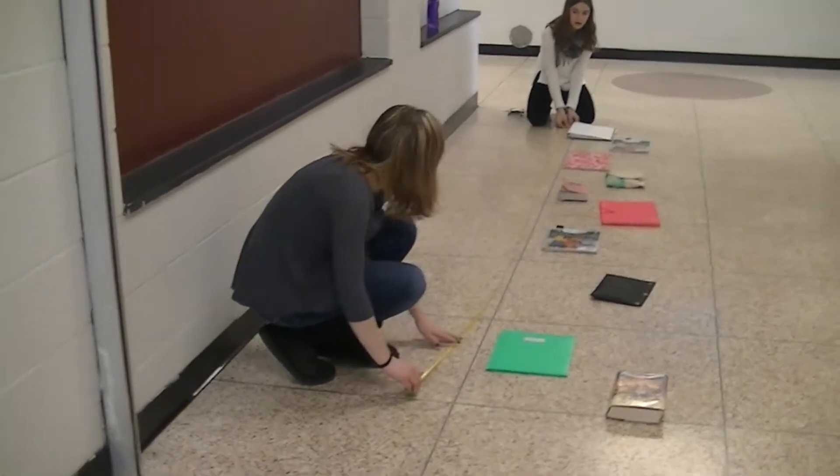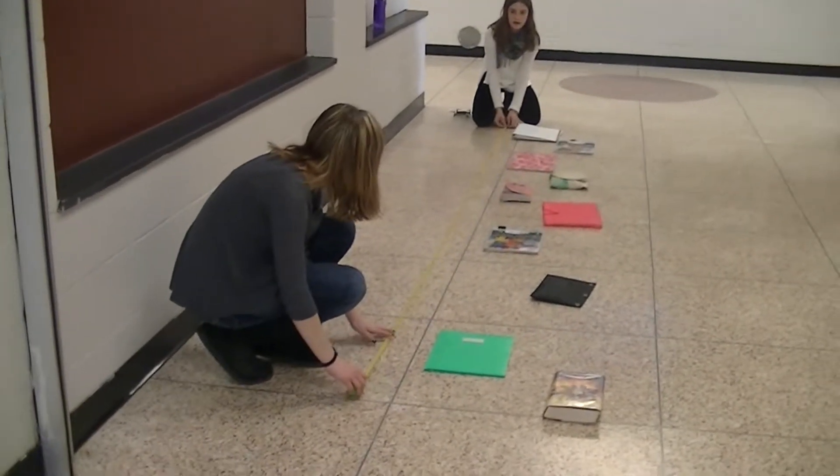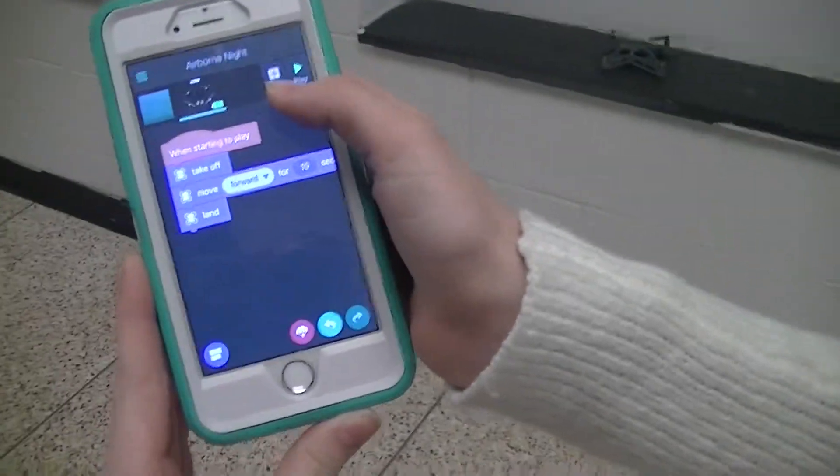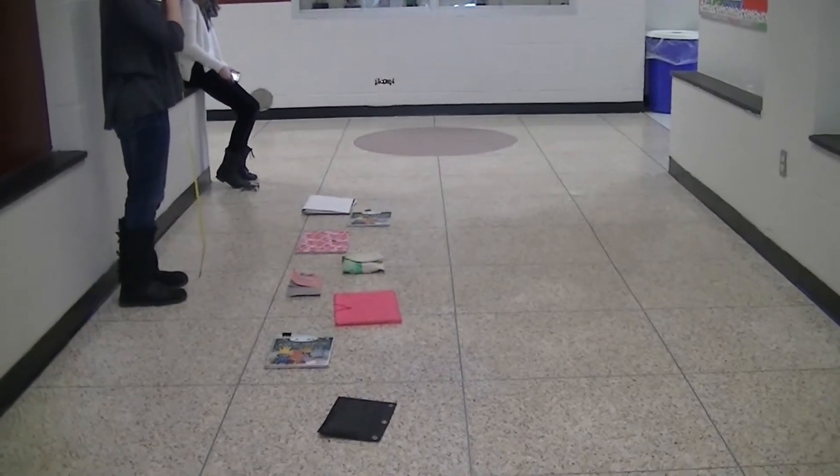This is 12 feet and it is multiple colors so the drone will fly straight in one path. First we have our drone take off and then we have it move forward for 10 seconds. After the 10 seconds it will land.